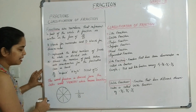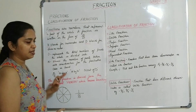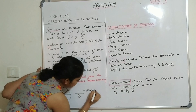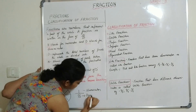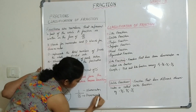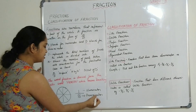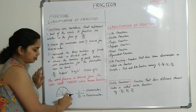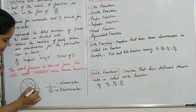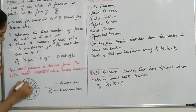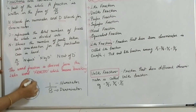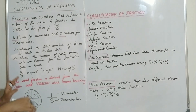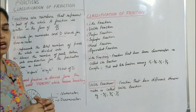Each member gets one of the total eight parts, so the fraction each member gets is one out of eight, or one by eight, or one upon eight. Here, one is the numerator and eight is the denominator. The denominator represents the total number of parts the whole is divided into — eight parts — and the numerator shows the number of parts taken into consideration, that is one-eighth for each member.